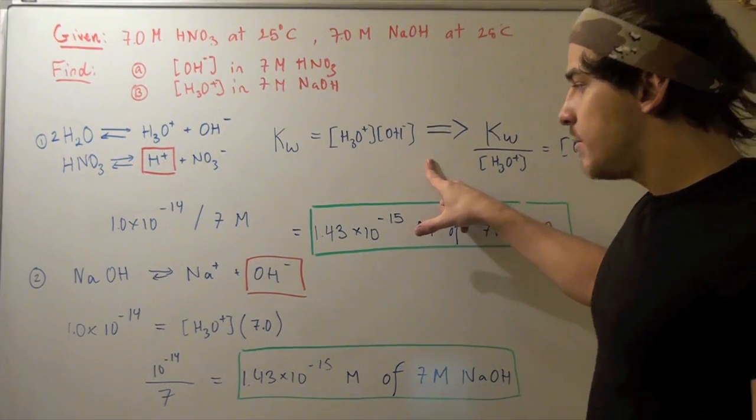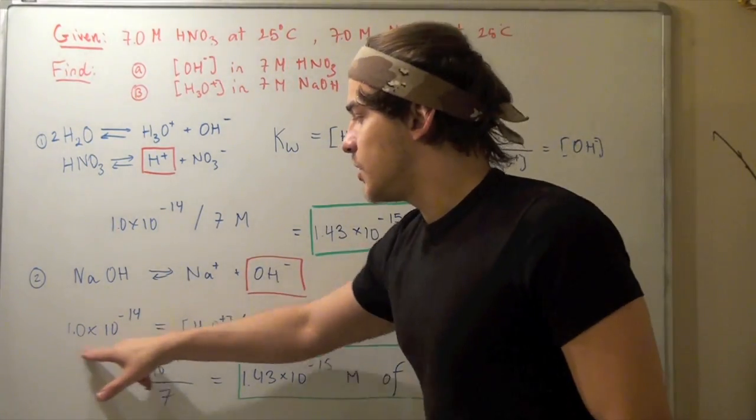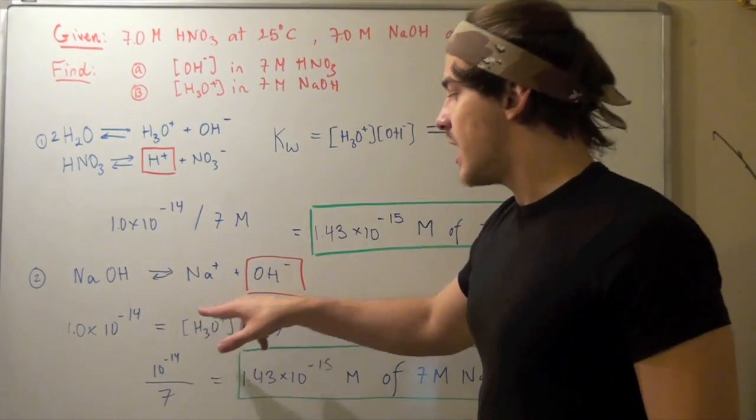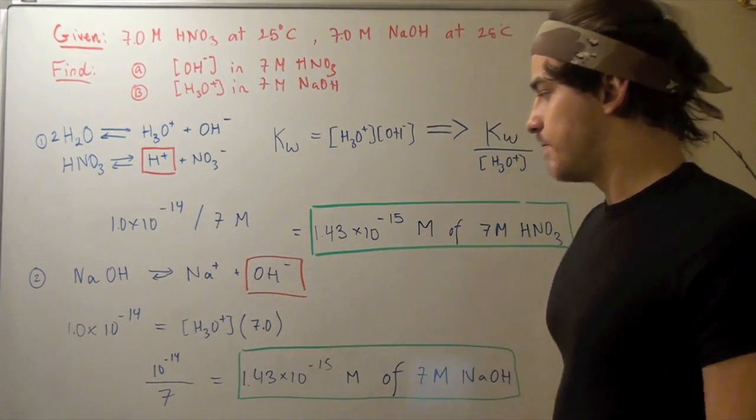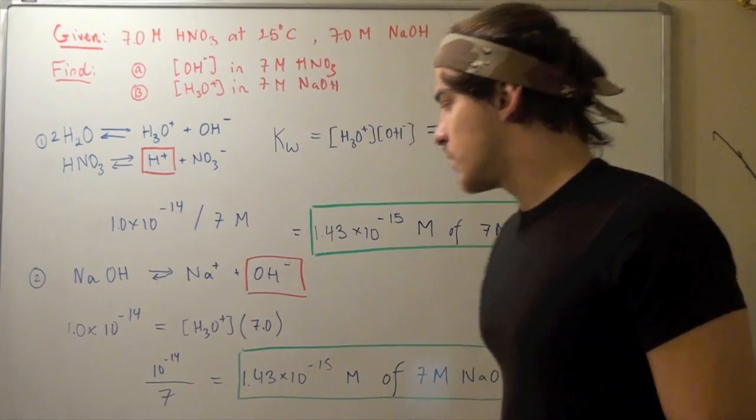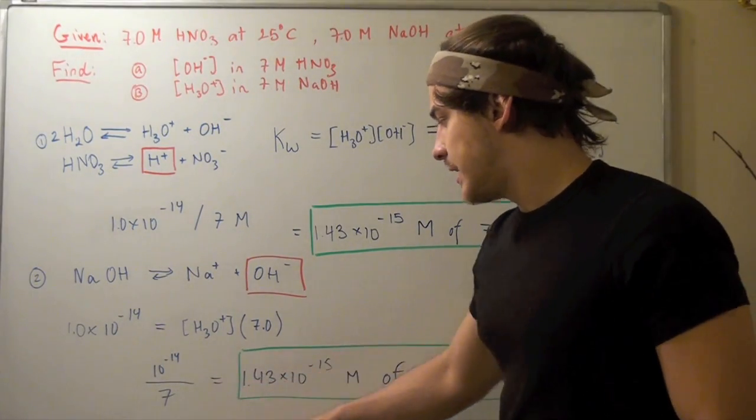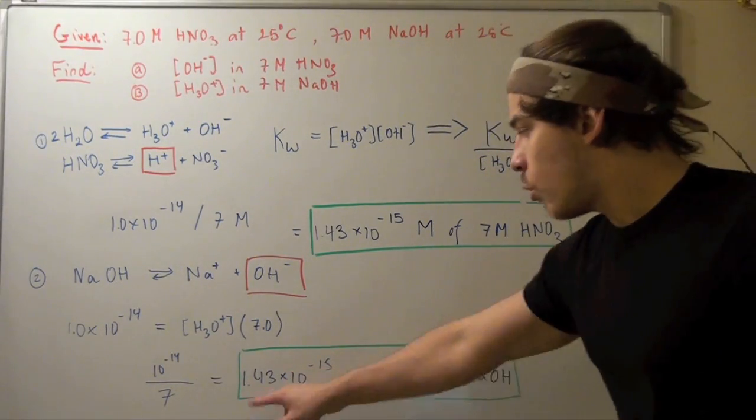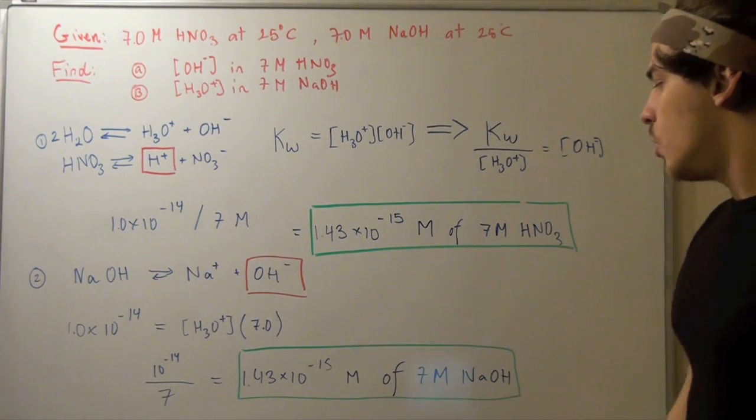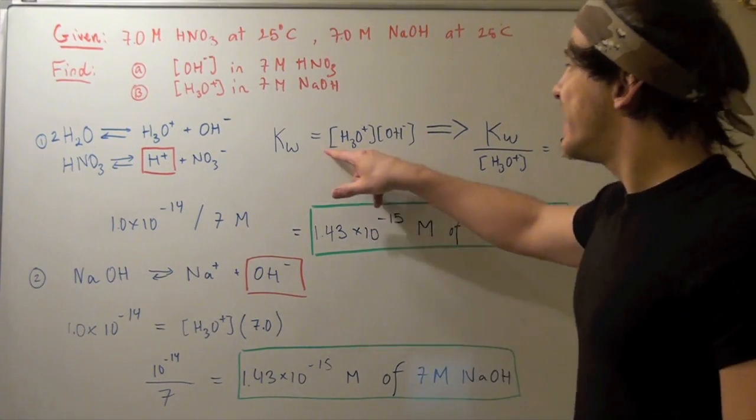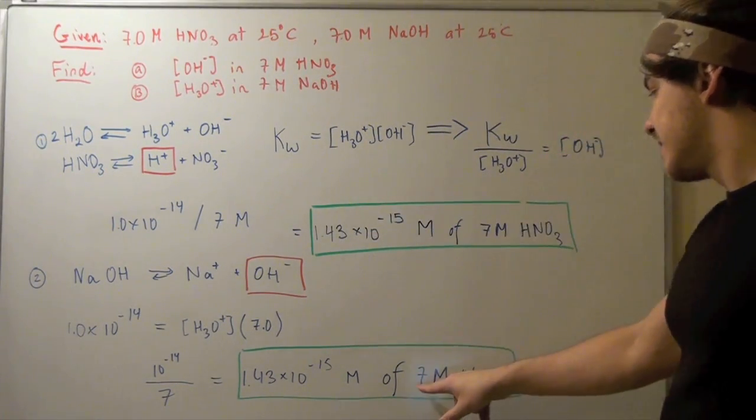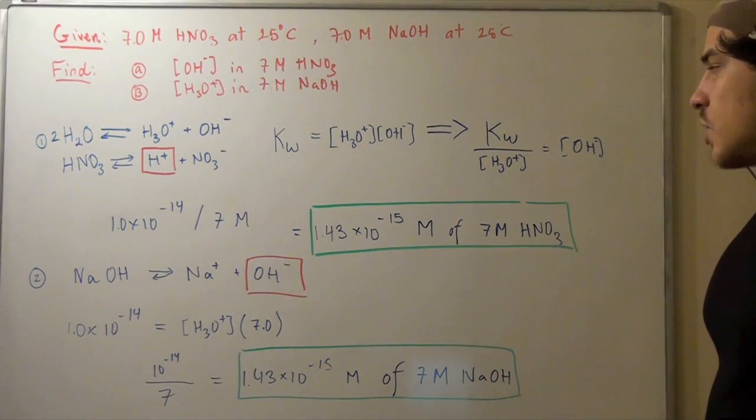We simply repeat the step. KW 10 to the negative 14 equals unknown times 7. We bring the 7 over, divide, and get 1.43 times 10 to the negative 15 molar of hydronium in 7 molar sodium hydroxide.